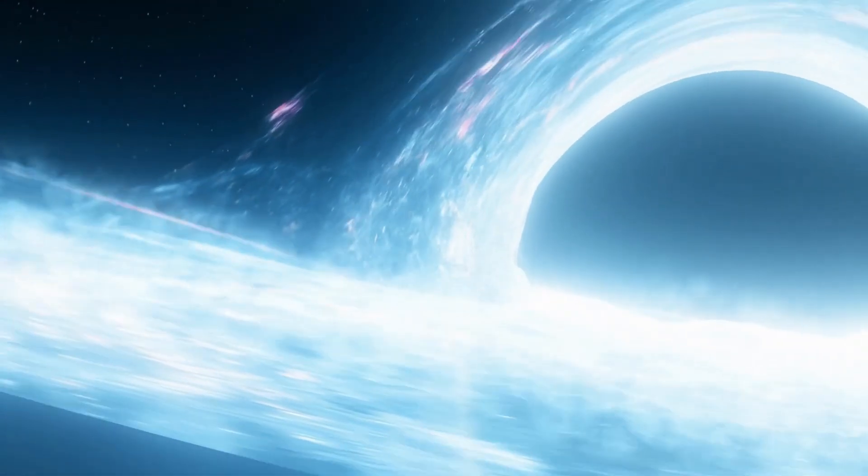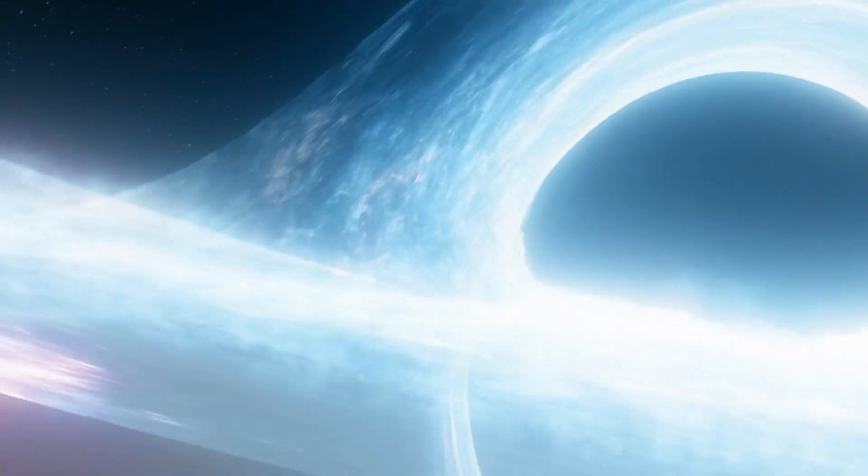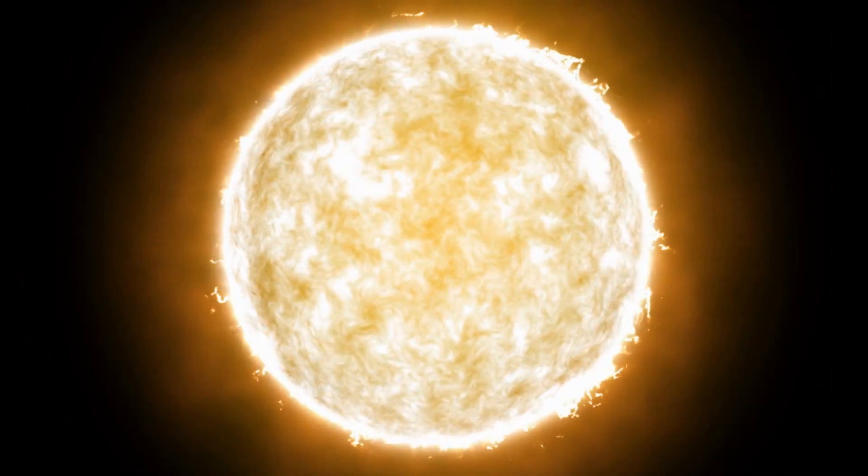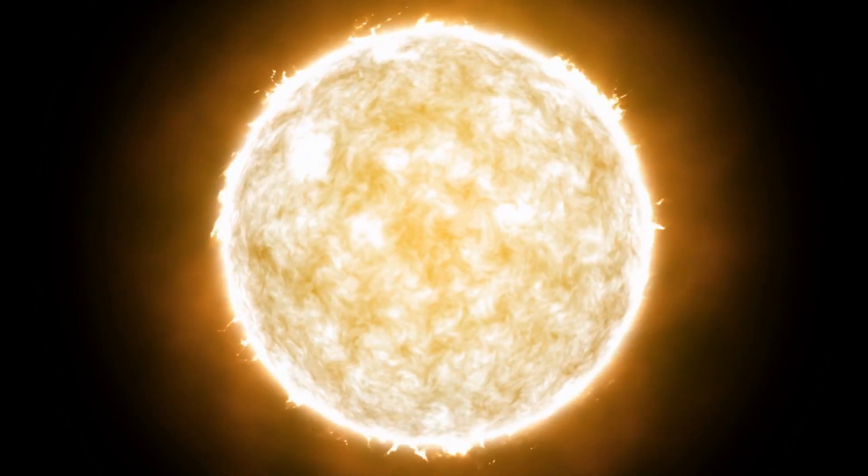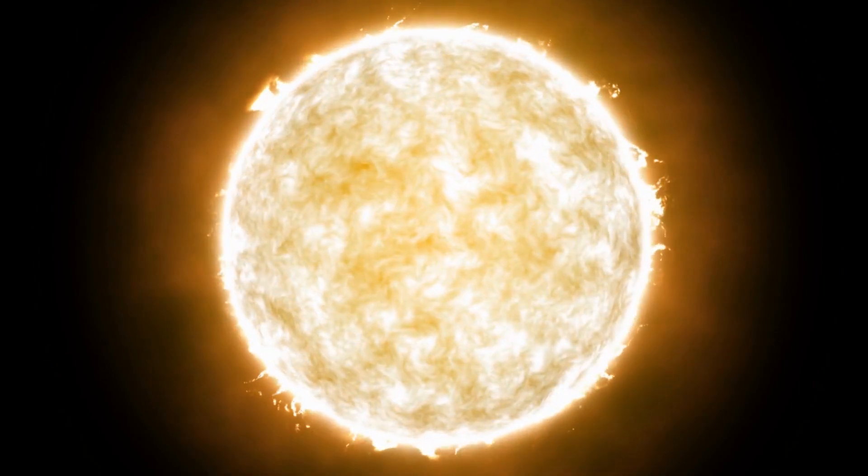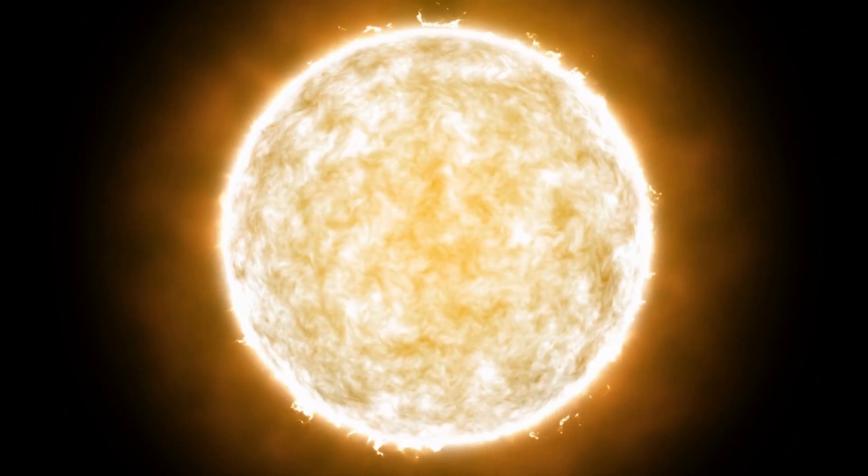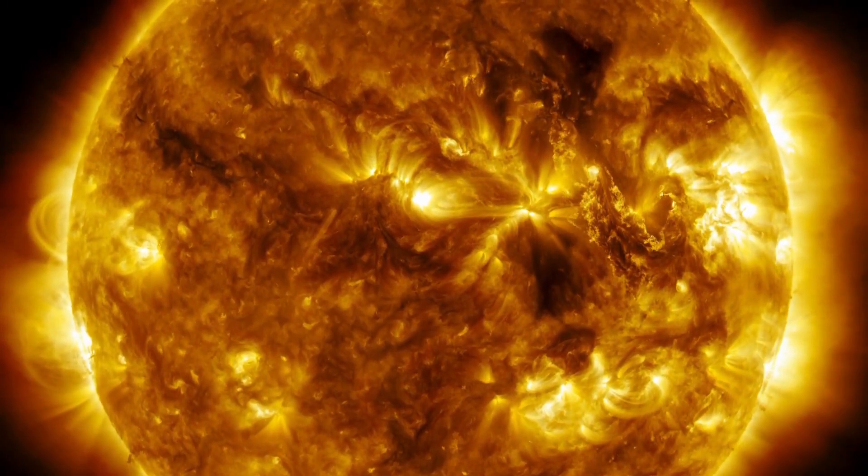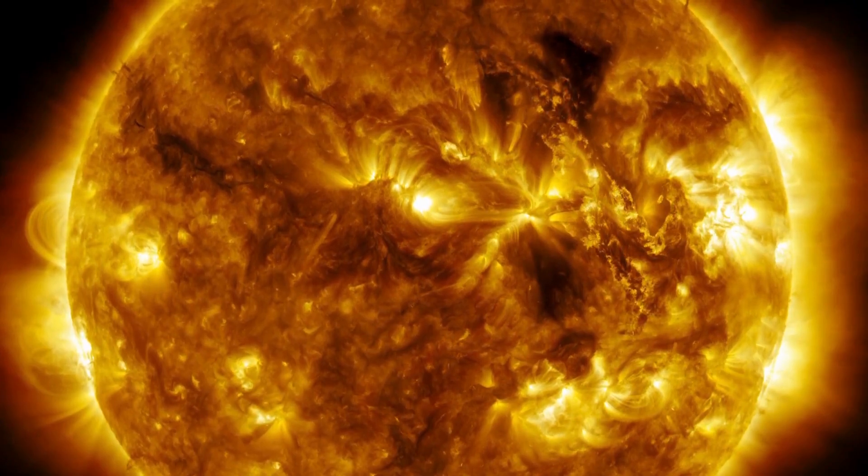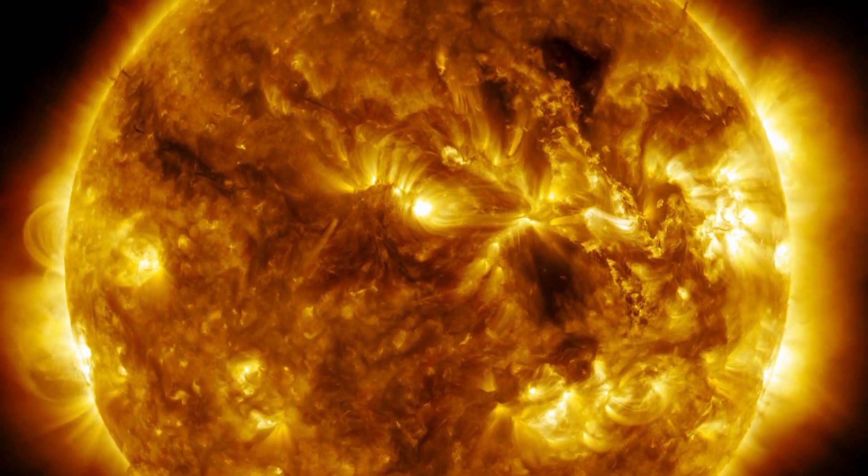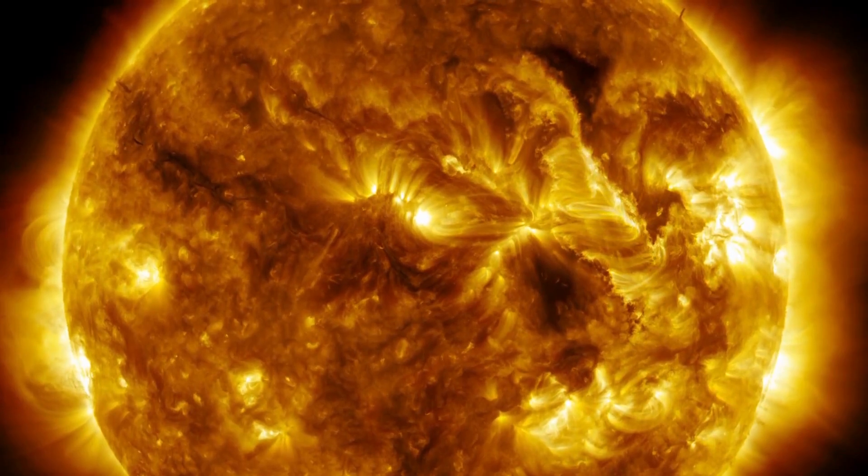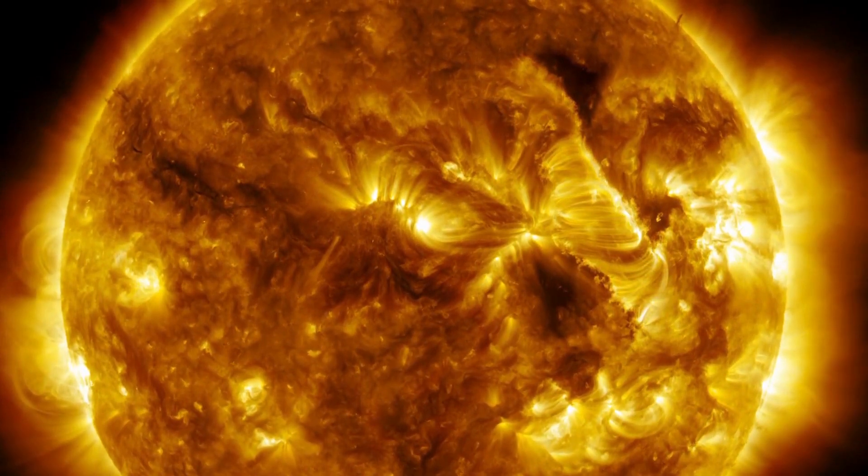To understand how black holes formed and what happens inside them, it is necessary to go back to the life cycle of a massive star. These massive stars are true cosmic powerhouses fueled by the incredible nuclear fusion reactions that take place in their cores. The sun's energy source comes from the fusion of hydrogen into helium. During this process, two hydrogen atoms combine in a collision and form a helium atom. As long as the star has enough hydrogen to carry out the fusion, it can maintain its brightness.